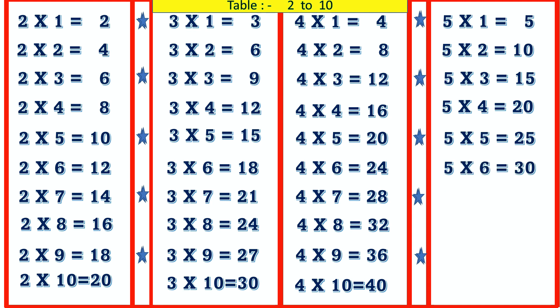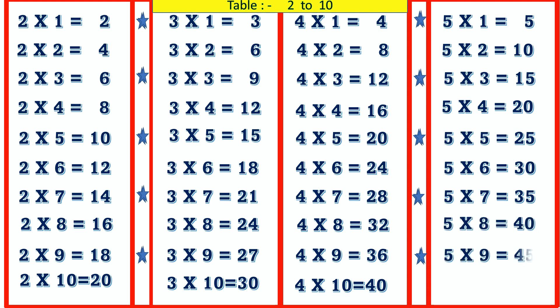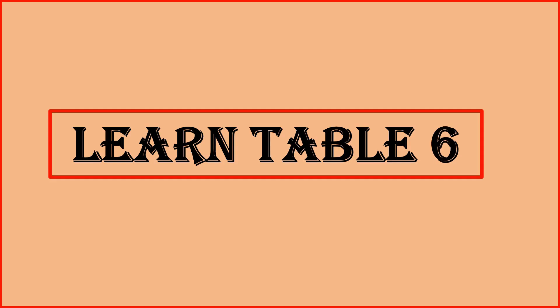5 7's are 35, 5 8's are 40, 5 9's are 45, 5 10's are 50. Learn table 6.